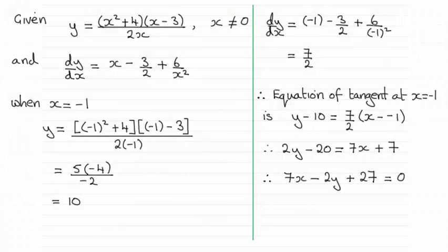Hi there. Now for this part of the question, we are asked to find the tangent to the curve at the point where x equals minus 1 and give our answer in the form ax plus by plus c equals 0, where a, b and c are integers.